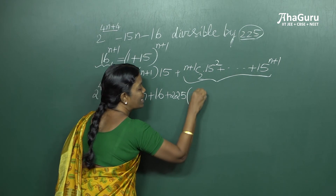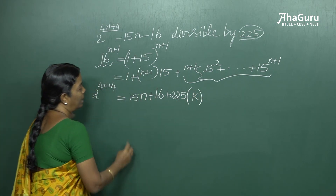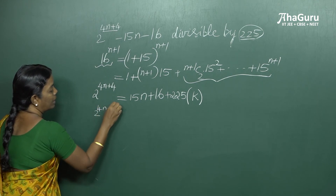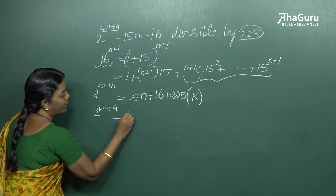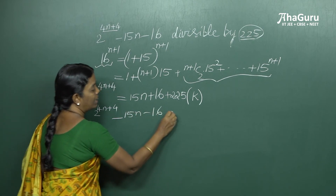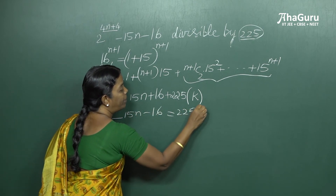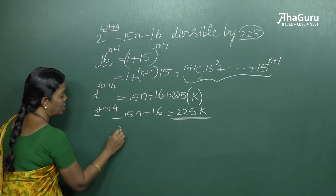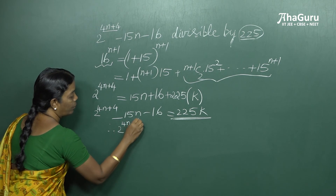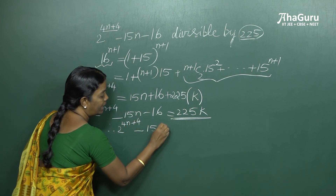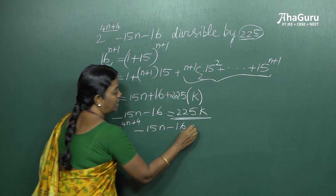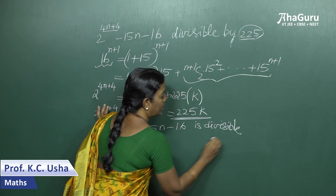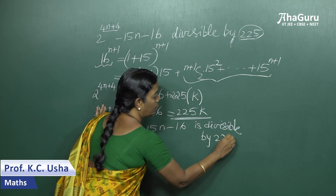That entire expression inside the bracket, we call it k. Now bringing the terms (n+1)×15 and 1 to the left side, we get 2^(4n+4) minus 15n minus 16 equals 225k. So we conclude that the expression 2^(4n+4) minus 15n minus 16 is divisible by 225.